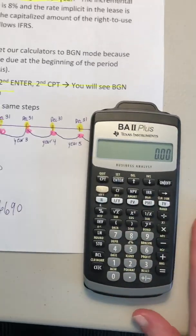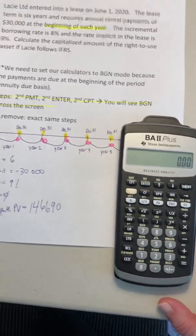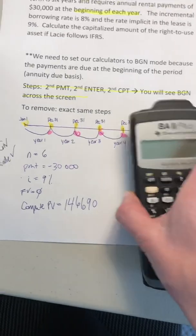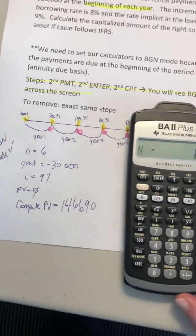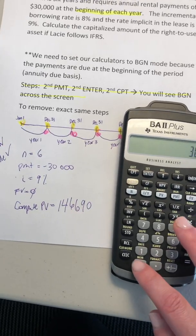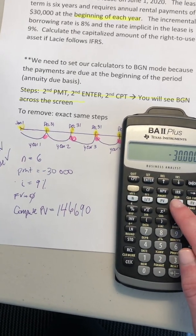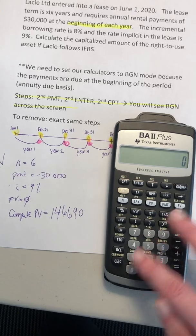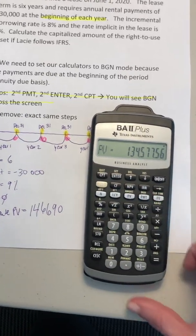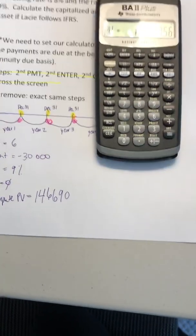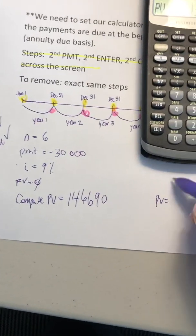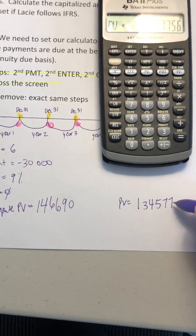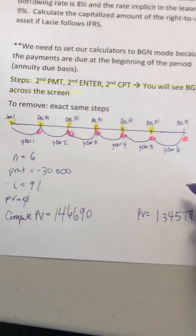Let's see what would have happened in this question if we had calculated the present value of this lease without begin mode on. Putting in the exact same inputs — 6N, $30,000 negative payment, 9I, 0 future value — and computing present value, I'm going to get a present value of $134,577 or $134,578. And this is with no begin mode.